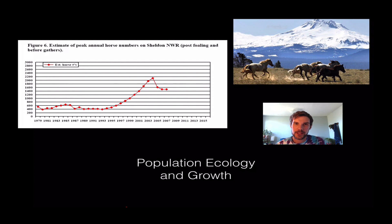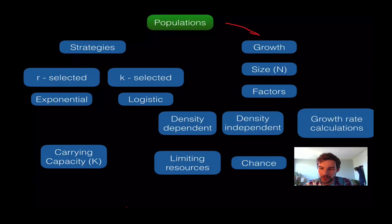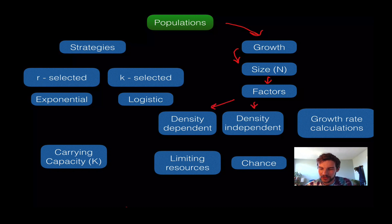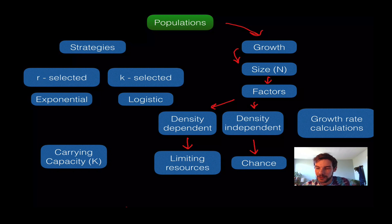We have a population of wild horses in southeast Oregon and we've graphed out their population. We want to know what is happening with the dip in their population — that could mean bad things or good things depending on what we look at. In this video we'll talk about growth and how to calculate the size of populations. There are certain factors that can limit or inhibit populations: density-dependent and density-independent factors. Density-dependent factors matter based on how many individuals are in a given area — those are limiting resources like food, water, and shelter. Density-independent factors could be due to chance, so fire could be a density-independent factor.